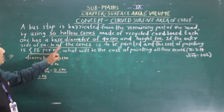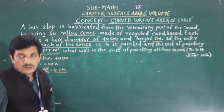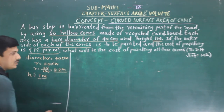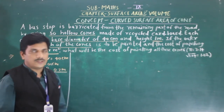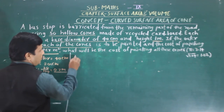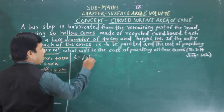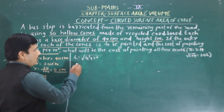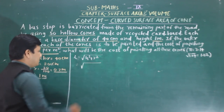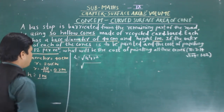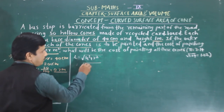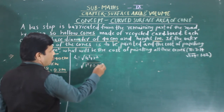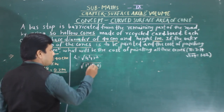Since we need the outer side of each cone, we need to find out the curved surface area. First we will find out the slant height, because without slant height we cannot find the curved surface area. Slant height l is equal to the square root of (h² + r²). We have h and r, so now putting in the values: h is 1, r is 0.2.